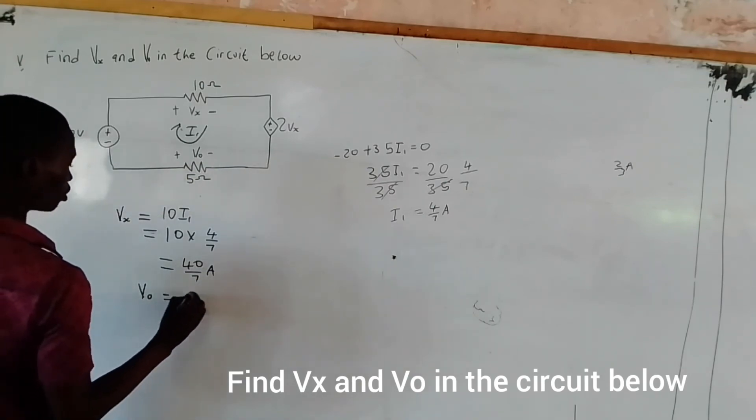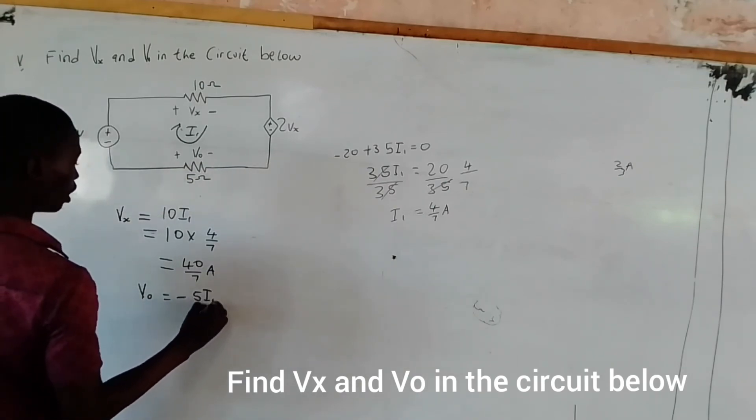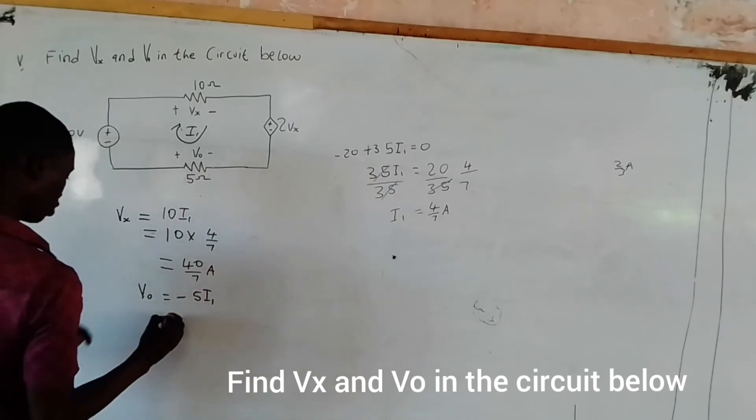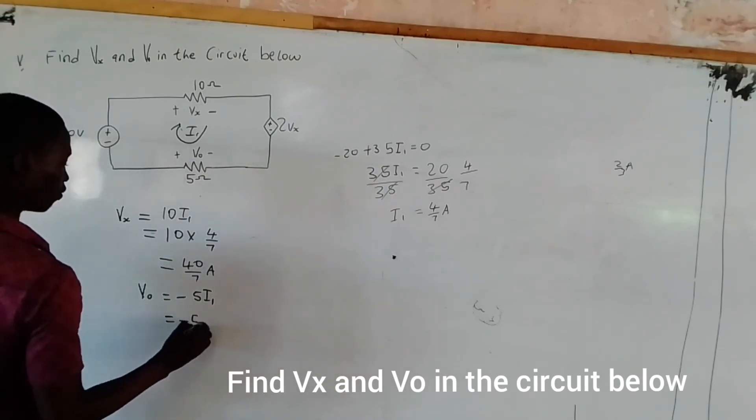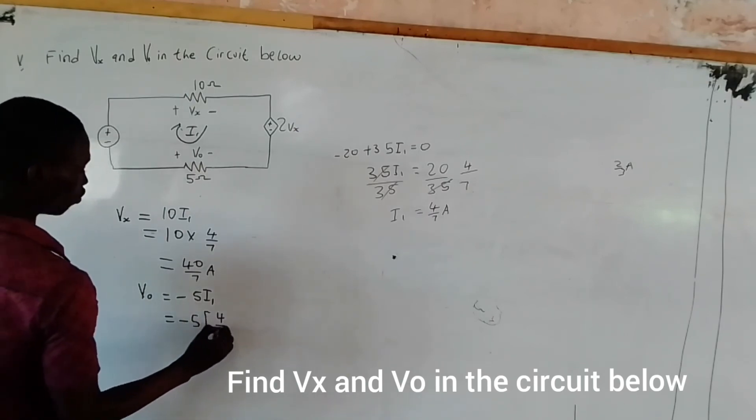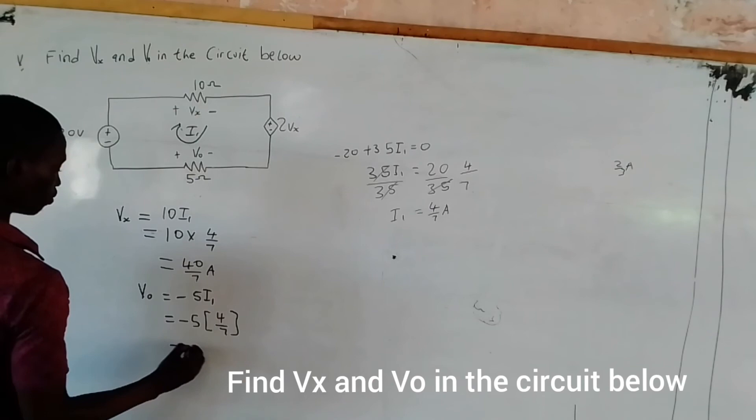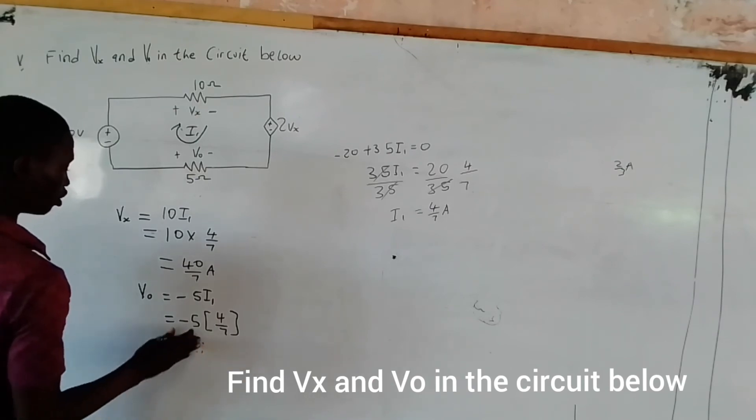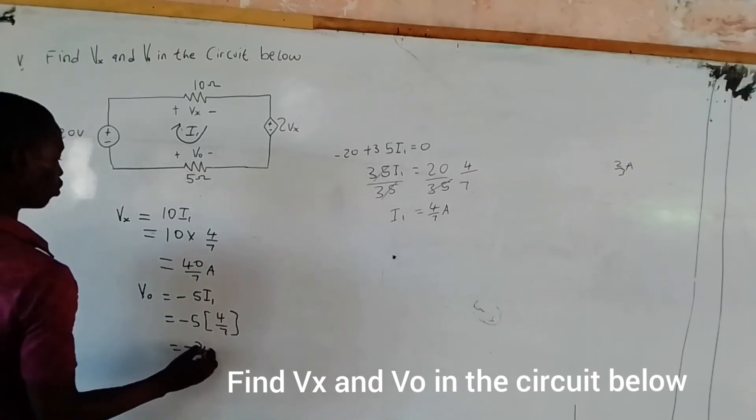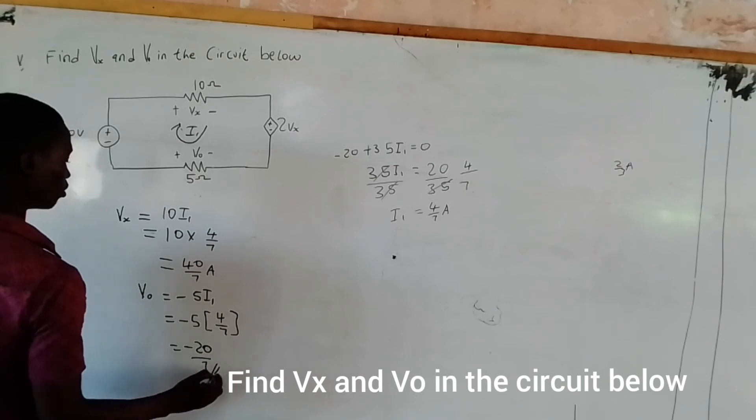What about V0? This goes to minus 5I1, and that's going to give us equals minus 5, and I1 we just got is 4 over 7. So multiply this, you give us minus 20 over 7 amps.